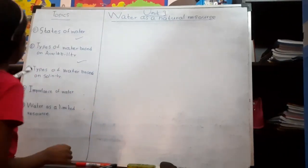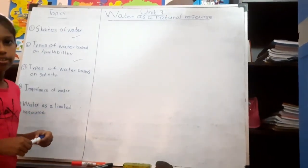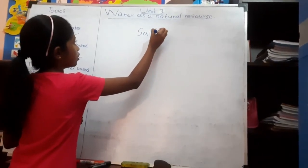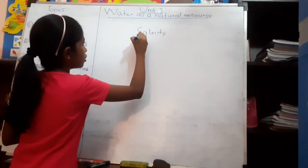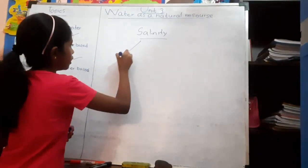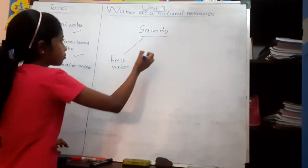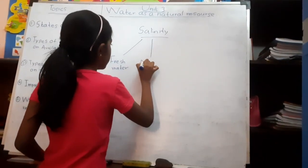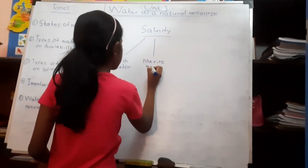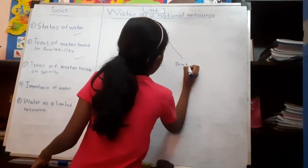Now we will discuss the types of water based on salinity. What is salinity? Salinity is the amount of salt dissolved in water. So there are three types of water based on salinity. There are fresh water, marine water, and brackish water.